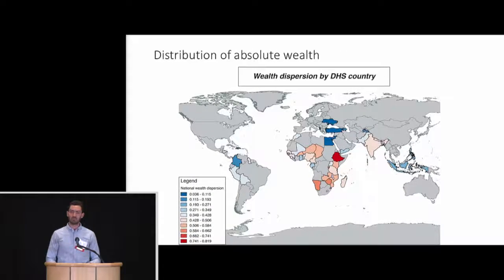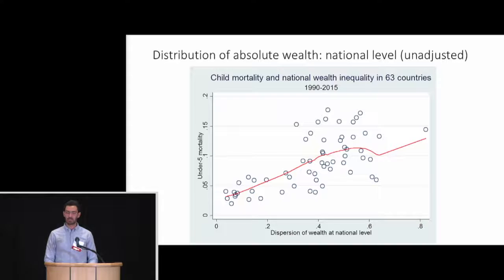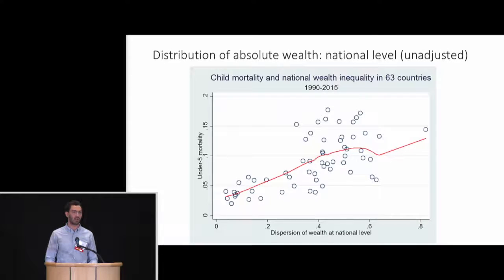What I'm more interested in is how the distribution of wealth within countries and communities is associated with health. I take my measure of dispersion of wealth and create a map showing wealth inequality across all countries in my data set — red indicates higher inequality. Countries that stand out with really high inequality in this period are Ethiopia, Namibia, and Zambia. Plotting that national-level dispersion of wealth against child mortality — each circle being a country — shows a potentially positive correlation between increasing inequality and increasing under-five mortality, which is what you might expect. Many people have posited that inequality itself, even after controlling for your wealth, may be detrimental to health.